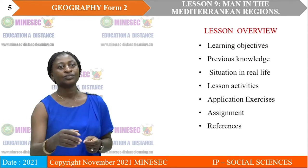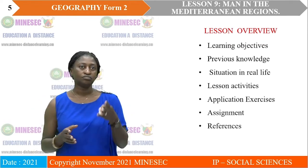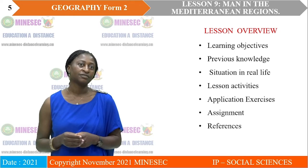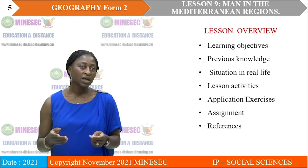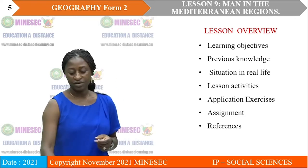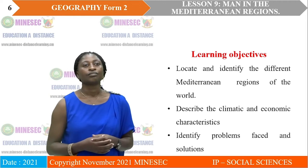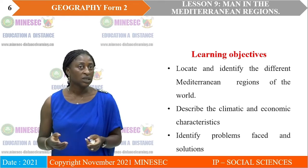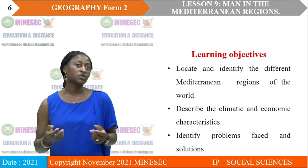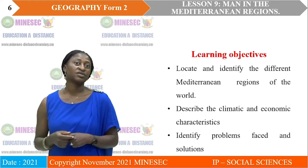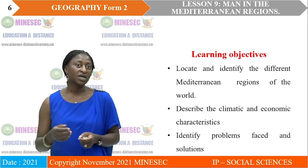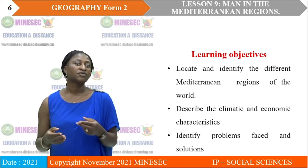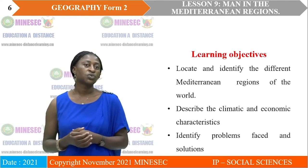Let's go to our lesson overview. We have learning objectives, previous knowledge, situation in real life, lesson activities, exercises, assignments, and the different references. The objective of our lesson: we have talked about Man in the Mediterranean regions of the world, so we have to locate and identify the different Mediterranean regions. We describe the climatic and economic characteristics of this area, and we identify the different problems faced and propose solutions.